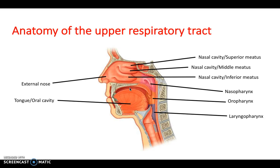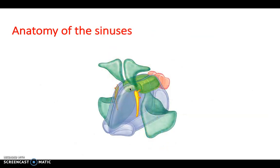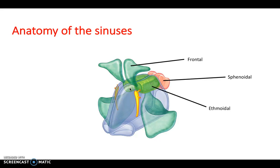Going down from the pharynx is the larynx, then continuing further is the trachea. The esophagus lies posterior to the trachea, though it relates to the GI system. These are the paranasal sinuses: the frontal sinus, sphenoidal sinus, ethmoidal sinus, and the largest — the maxillary sinus. Their exact purpose is uncertain, but they may lighten the skull or help resonate the voice.